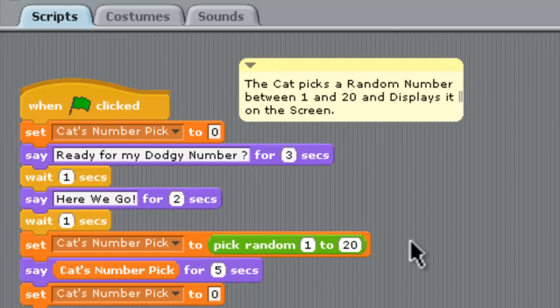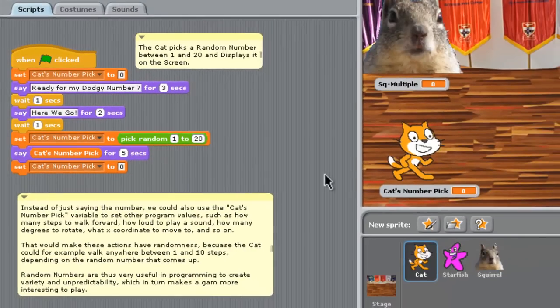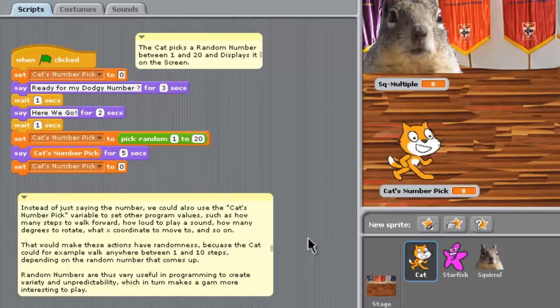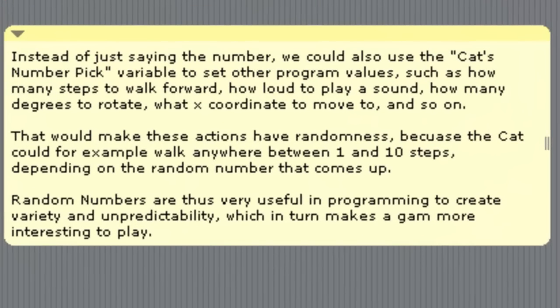And we set the cat's number pick, that variable we made, to a random number between 1 and 20. So it could be any whole number between 1 and 20. It could be 9, 13, 15, 17, 5. And then he just says what his number is that got picked out and then just set it back to 0 ready to start the next time. Now random numbers are very useful in programming. This random number, rather than him just saying it, we could have that determine how many steps he walks forward, how loud a particular sound plays, how many degrees he rotates round, what X coordinate he suddenly moves to, and a whole lot of other things. So random numbers are good because they're going to create variety and unpredictability and that makes a game more interesting to play.